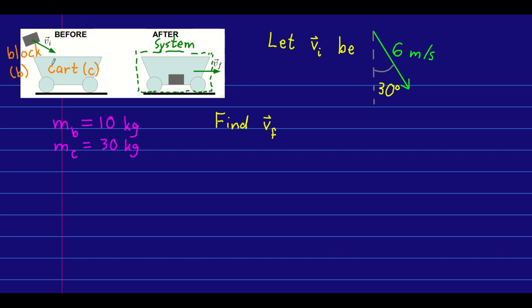Before the collision, the only thing moving is the block, and so the total system momentum must just be the block's momentum, and that is angled down like so.